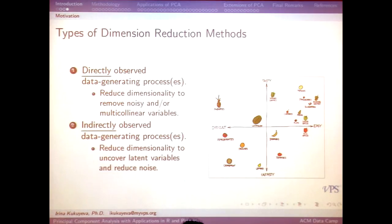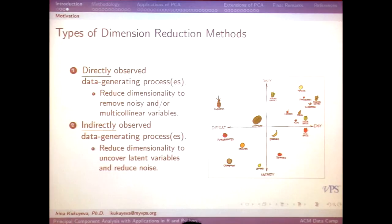I think of dimension reduction as two different types. One is where we directly observe what's going on in the data. For example, if we're a market research company and we ask people how tasty a fruit is, or how difficult it is to get to the fruit for eating, then you plot those two variables and you're done — you can analyze the data directly.